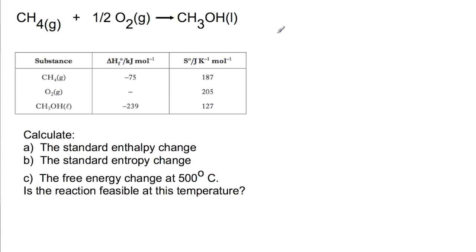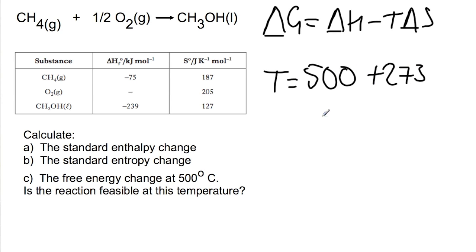For the final part of the question we've been asked to calculate the free energy change at 500 degrees C. That means that we're going to be using delta G equals delta H minus T delta S. T is in Kelvin so we need to change our temperature into Kelvin first. So we have 500 degrees C plus 273, 773 Kelvin.